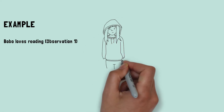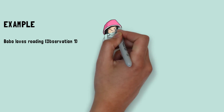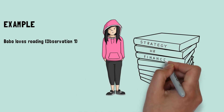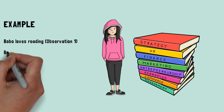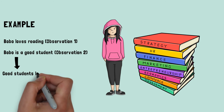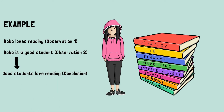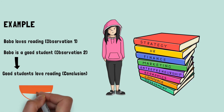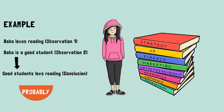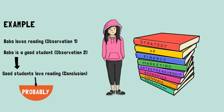Here is an example of inductive reasoning. Bobo loves reading. Bobo is a good student. You can probably already see some differences to deductive reasoning. First of all, probability — this conclusion that good students love reading is not certain. At most, we can say that it is probable. We might find a couple of good students who do not love reading; maybe they read because they know it's important.